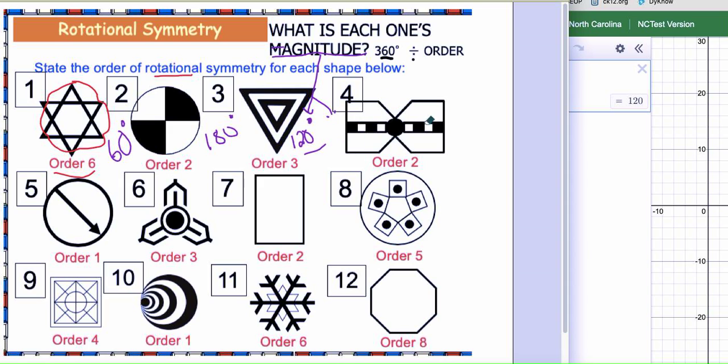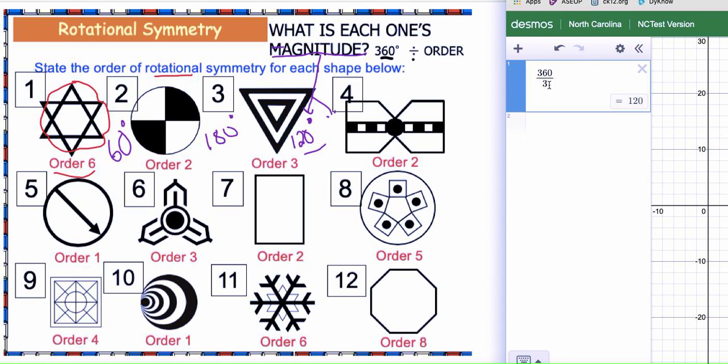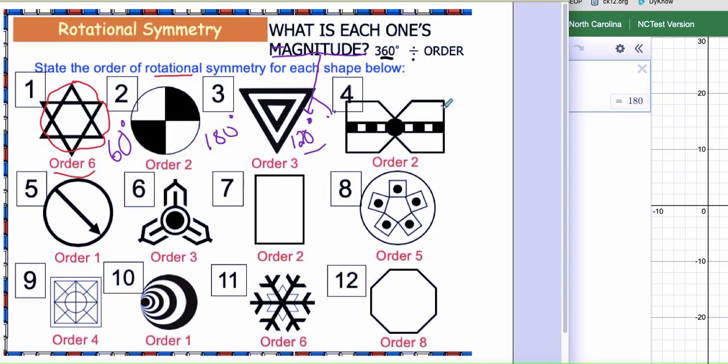So with that being said, I've got number four. Number four has order of two, so the order of magnitude is 360 divided by two, which again would give me 180 degrees.